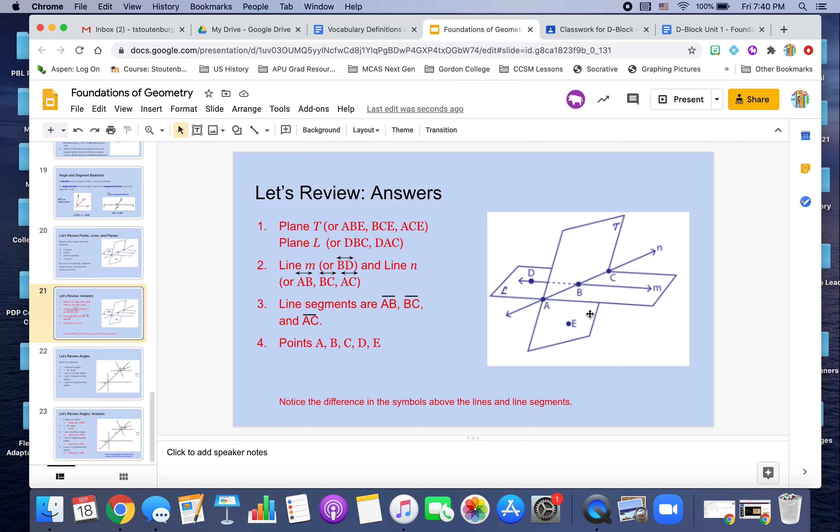And I can always interchange those letters. So instead of saying ACE, I could have said CEA, doesn't matter the order. Okay. And then of course our horizontal plane can be identified as plane L or DBC or DAC.